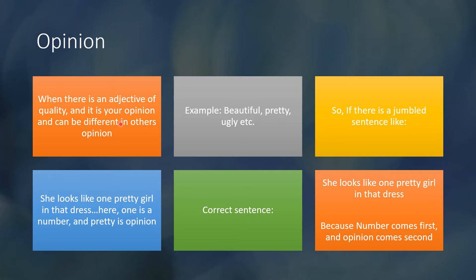Opinion is the second component. When there is an adjective of quality that reflects your opinion and can differ from others', such as beautiful, pretty, ugly, etc. — for example, you can say she is a beautiful girl, but someone else might think she is ugly. So it differs in everyone's opinion. In the sentence 'She looks like one pretty girl in that dress,' one is number and pretty is opinion, which is correctly ordered.